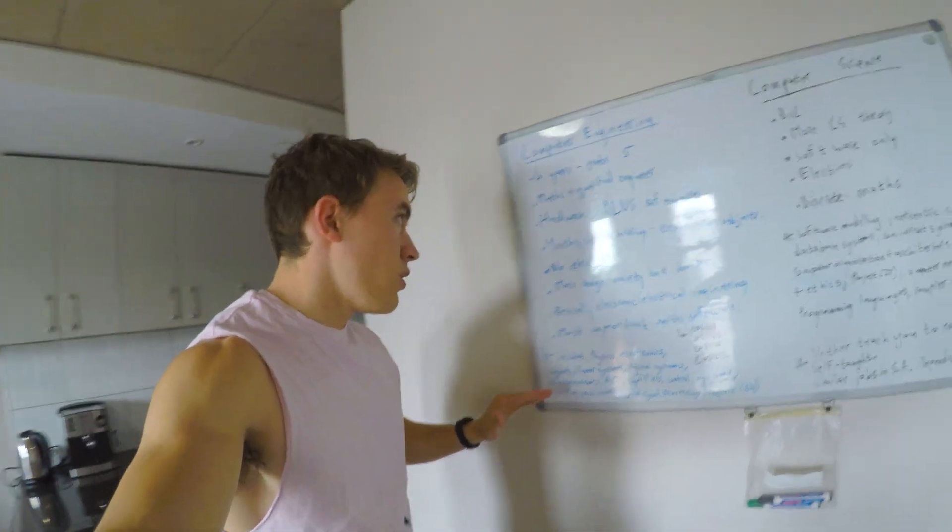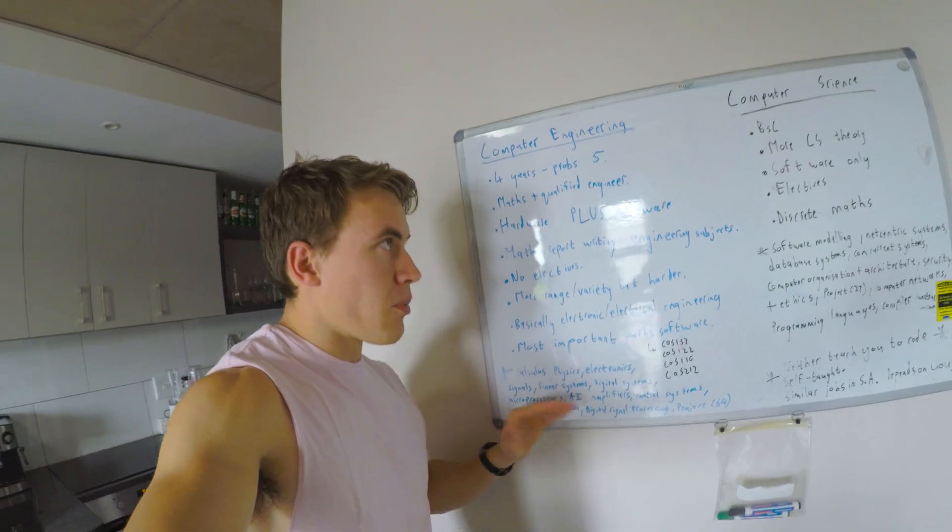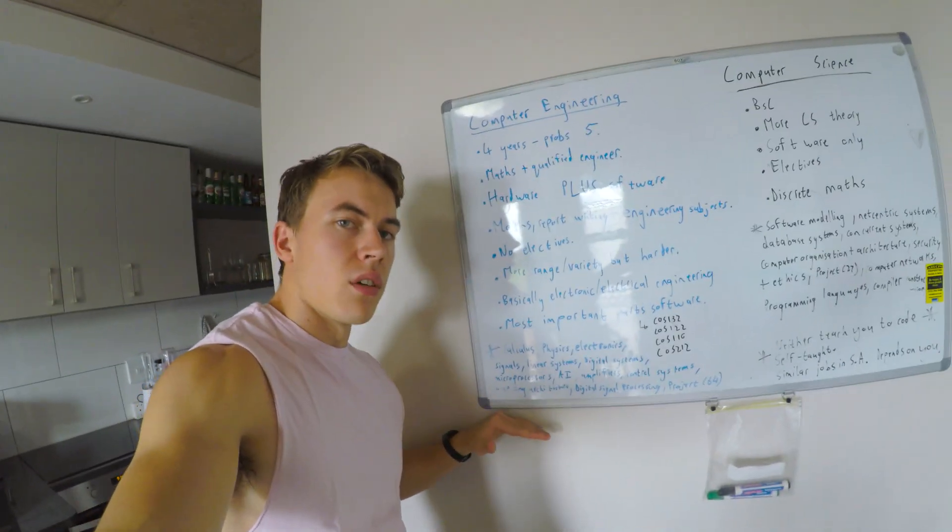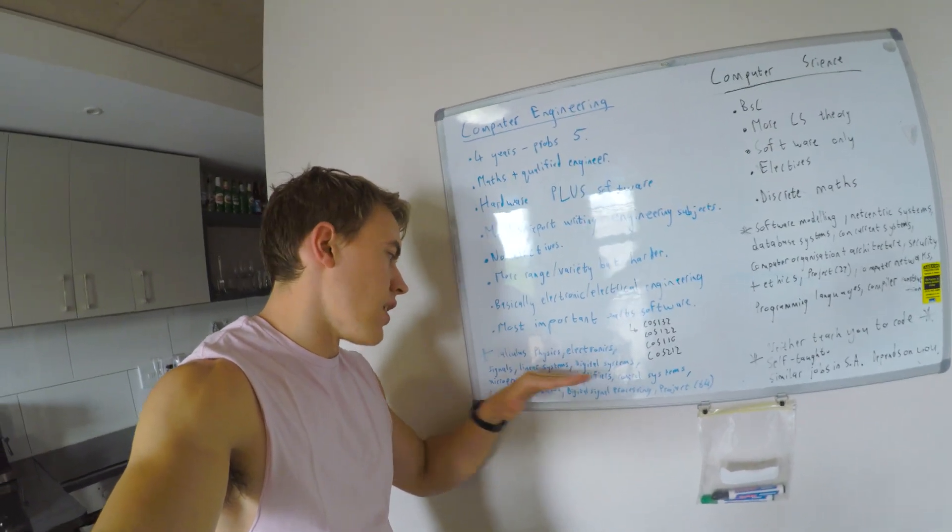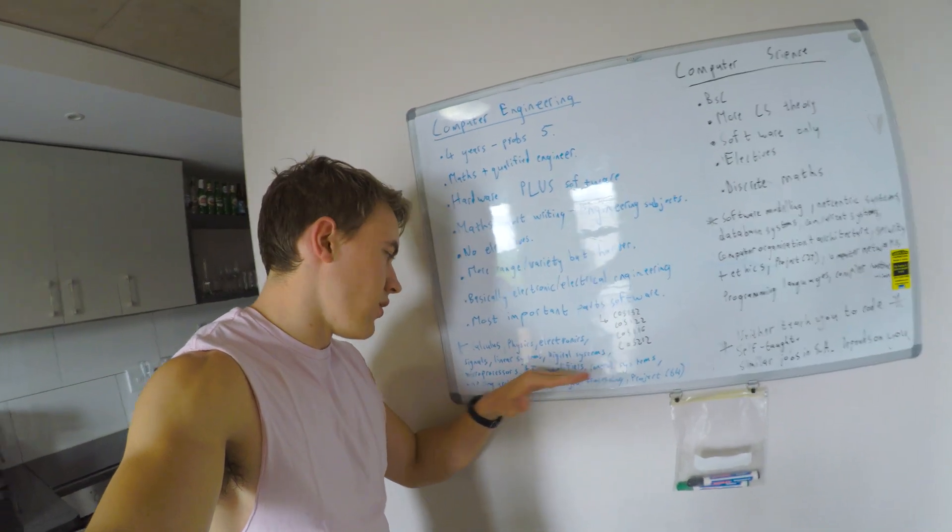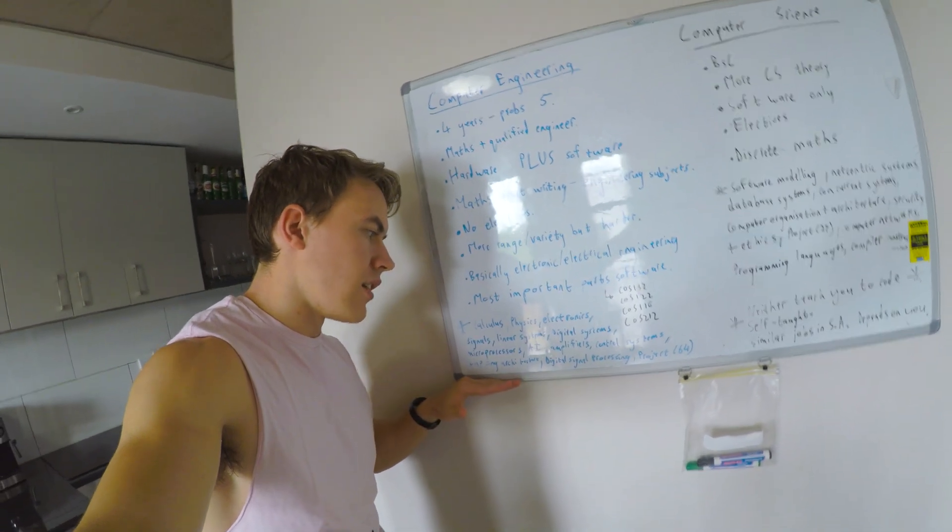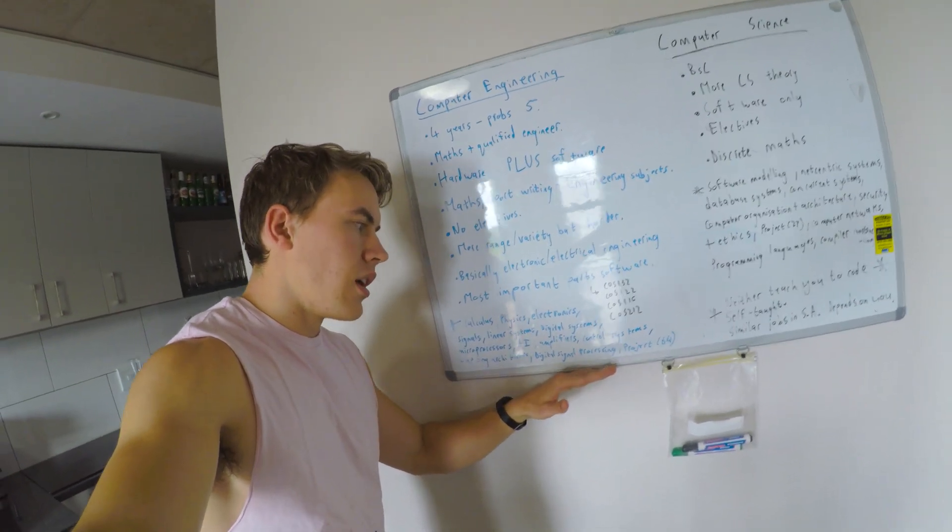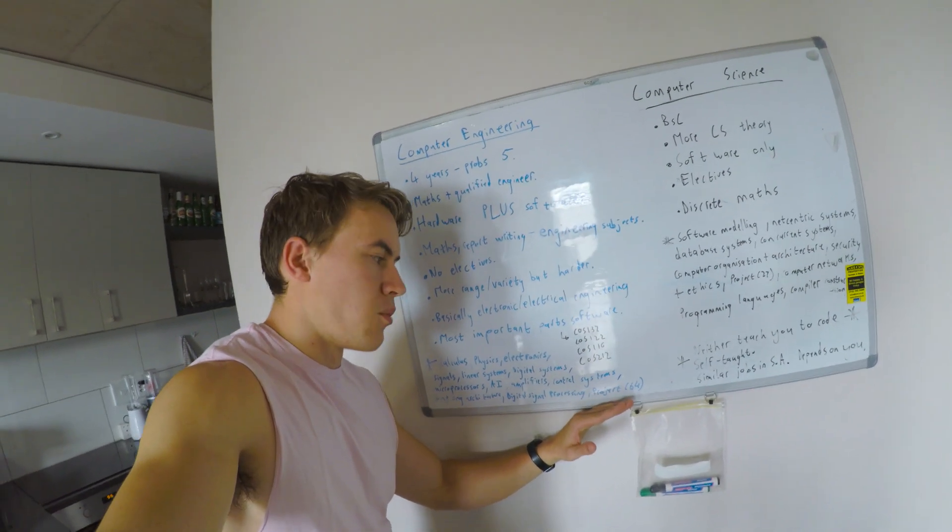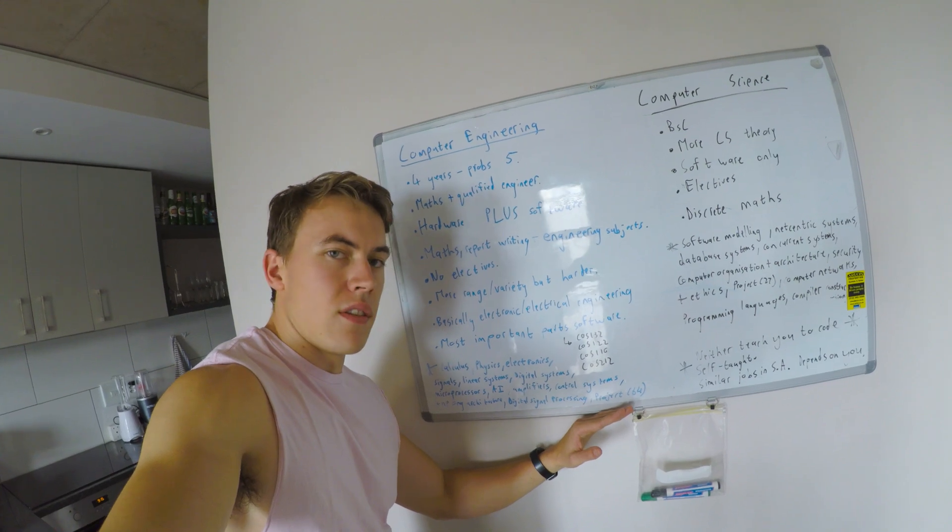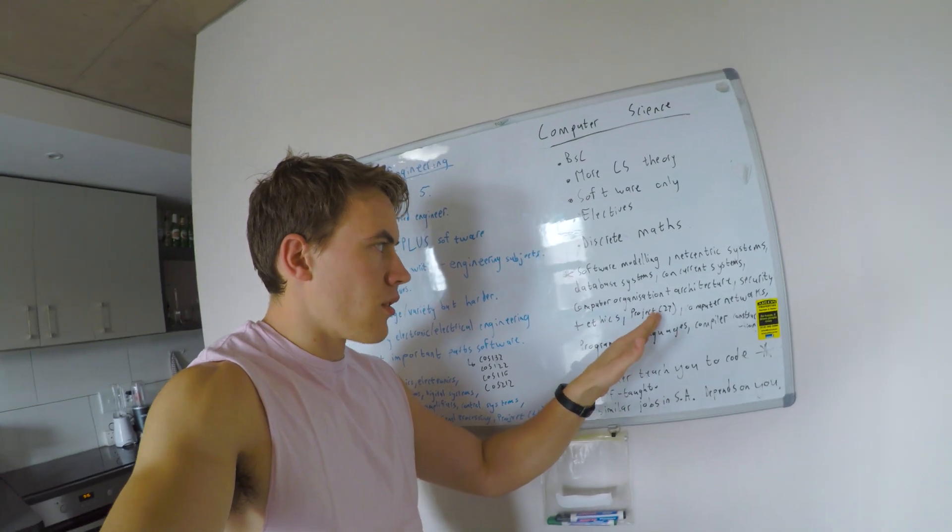So it's very interesting. I'll read you this list once again. You can go and look on the yearbook to see an exact breakdown of what's in each degree. Computer engineering, you're going to be working with types of things like calculus, physics, electronics, electronic signals, linear systems, digital systems, microprocessors, AI, amplifiers, control systems, computer architecture, digital signal processing. Your project at the end of your degree is a 64-credit hardware and software module that brings everything together. The project at the end of your third year of computer science is 27 credits.